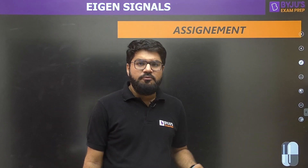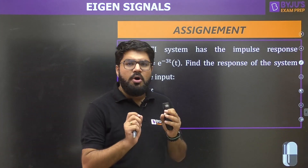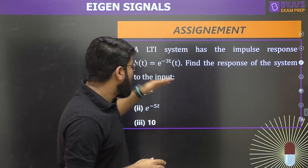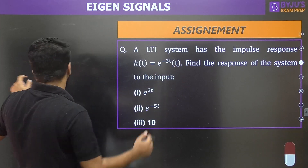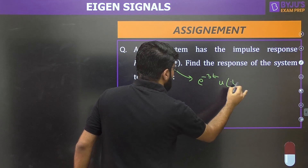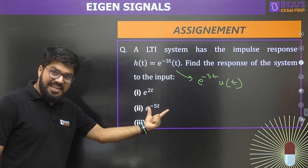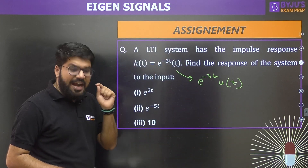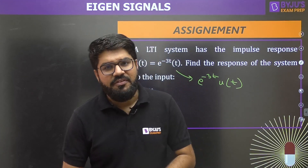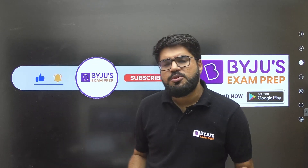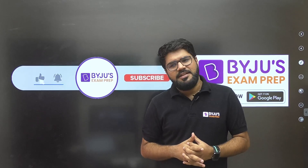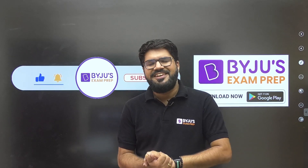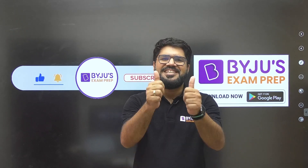As an assignment: an LTI system has impulse response h(t) = e^(−3t) u(t). Find the response to the inputs: (1) e^(2t), (2) e^(−5t), and (3) 10. Comment your answers below — I'll also share the correct answers. We'll bring more concept capsule videos covering important topics for GATE and Engineering Services. Direct questions on eigen signal and eigen function theory can be expected in upcoming GATE examinations. This is Rakesh signing off — bye bye, stay safe and take care.